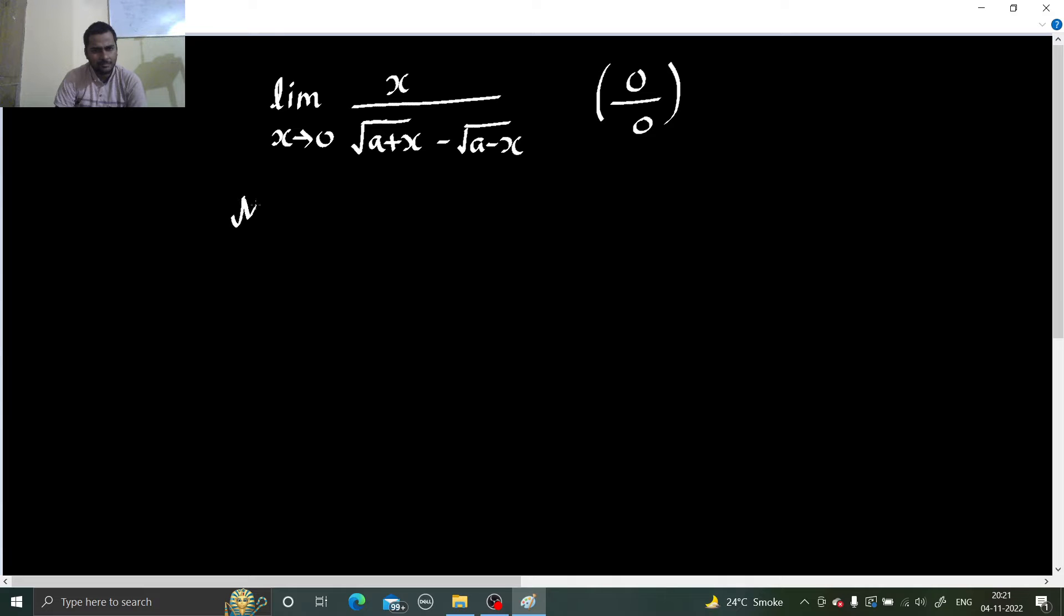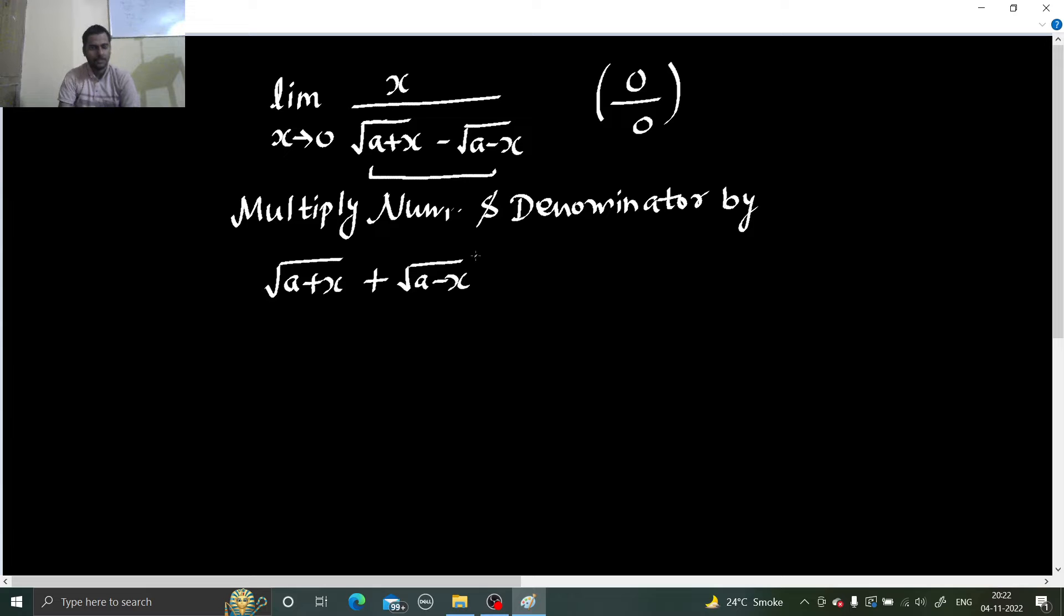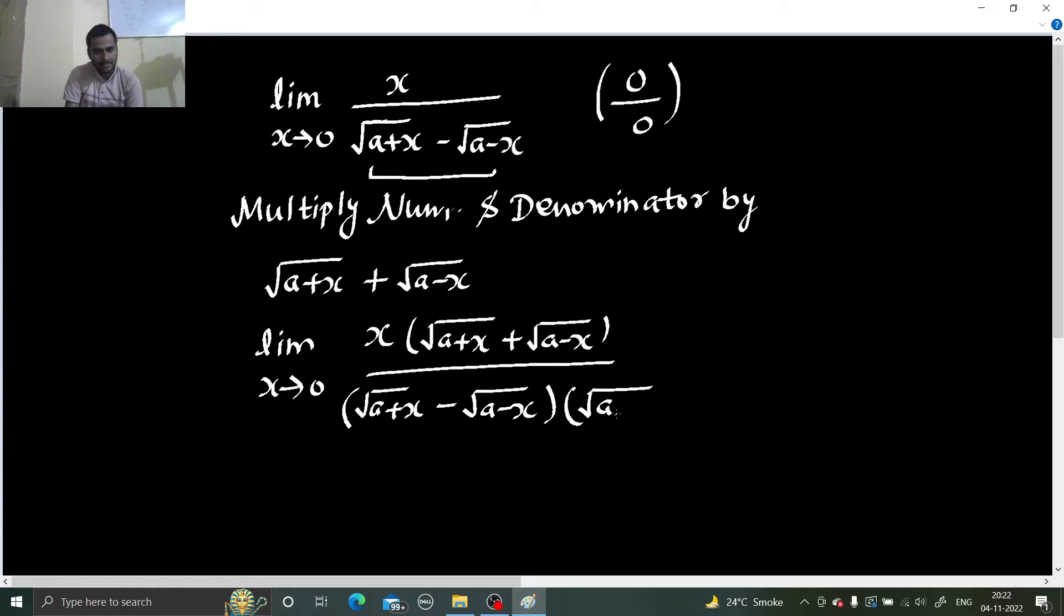We can rationalize that means multiply our numerator and denominator by conjugate of the quantity which is present in denominator. So its conjugate will be under root a plus x, change the sign, so plus under root a minus x. So if I multiply by this, limit x tending to 0, in numerator you will get x and with that you will get under root a plus x plus under root a minus x. In denominator this thing is already present which is under root a plus x minus under root a minus x. Along with that the conjugate will also be multiplied which is under root a plus x plus under root a minus x.